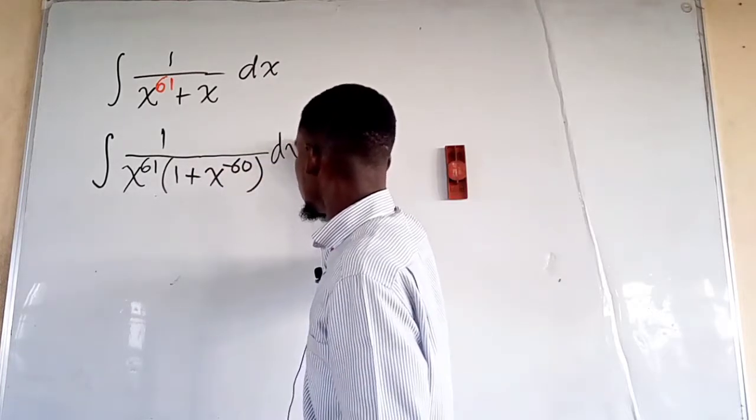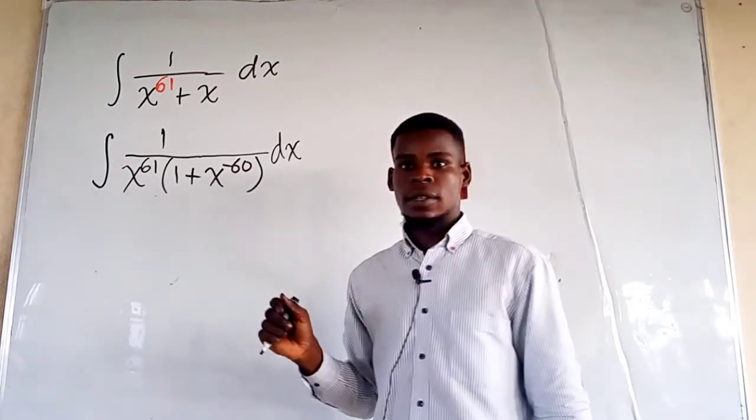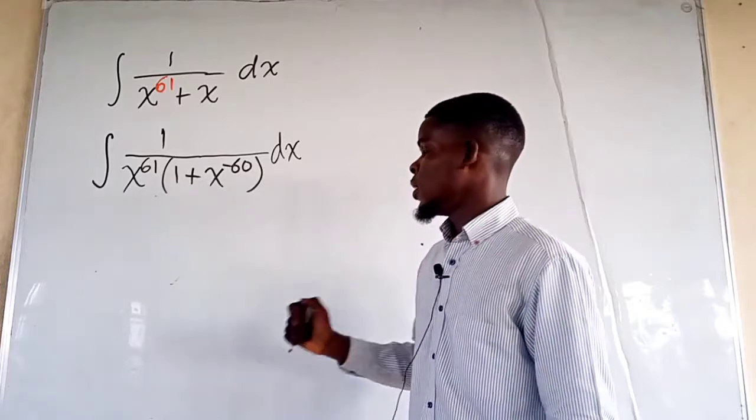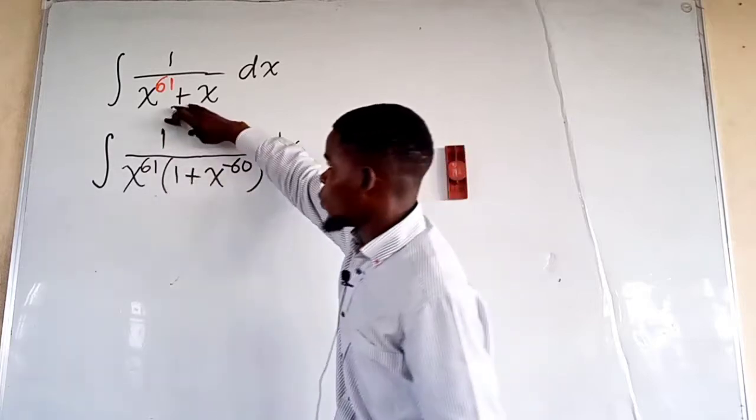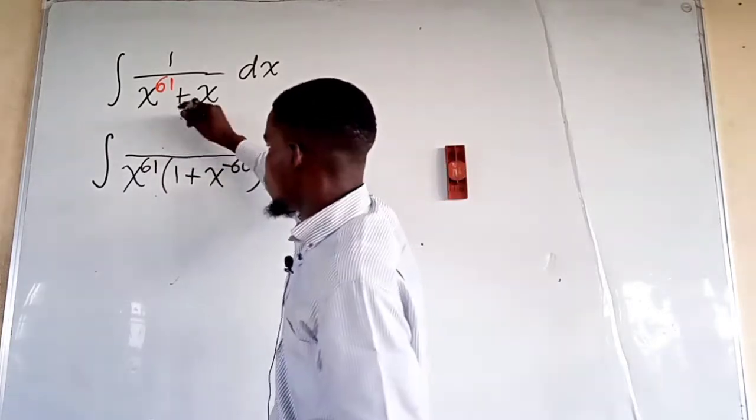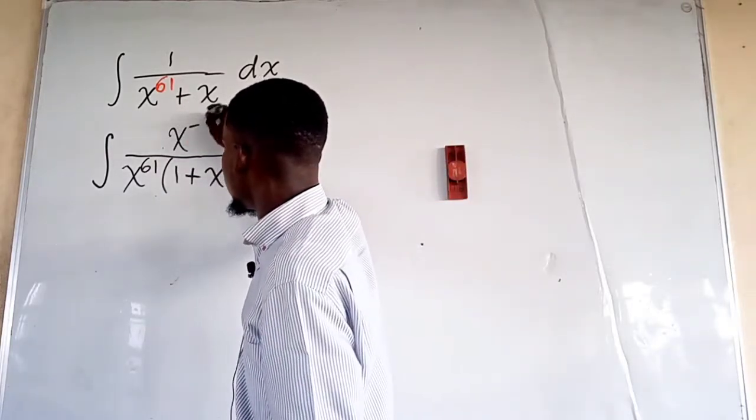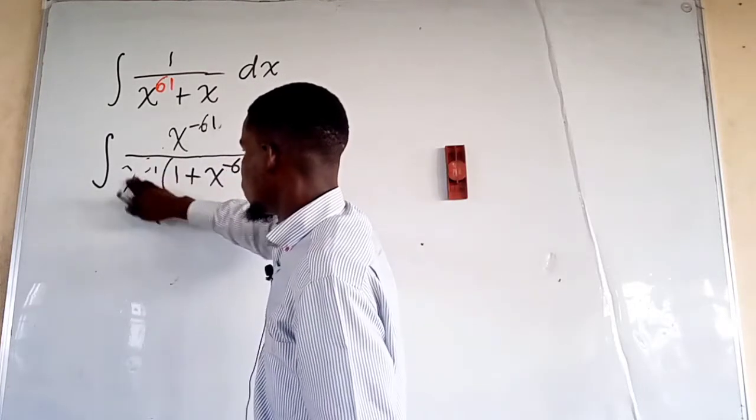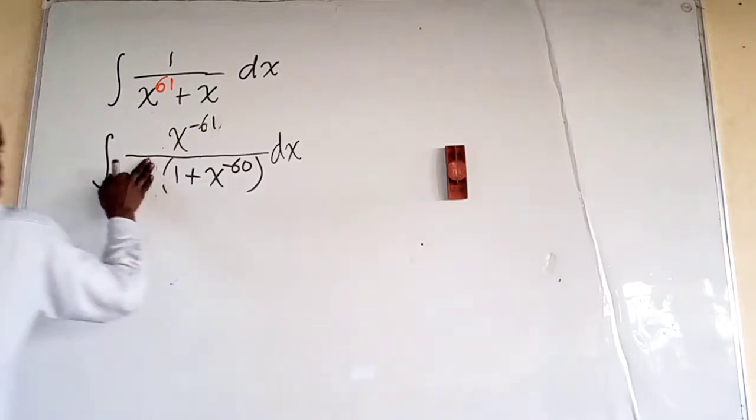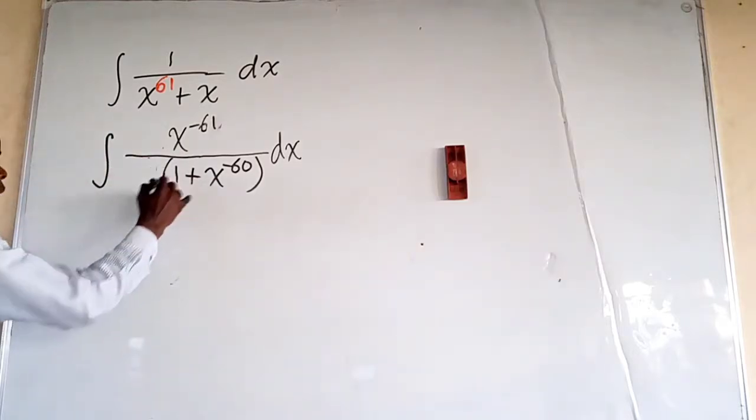You know that this thing in the denominator we can actually take it up by putting it here as x raised to the power of negative 61. So since it's there we can put it at the top like that.